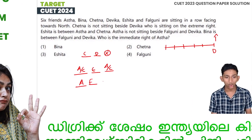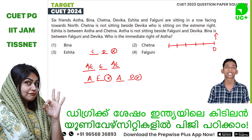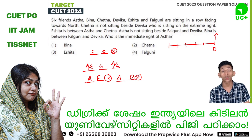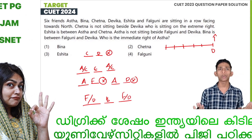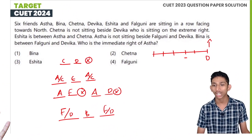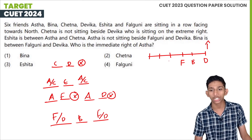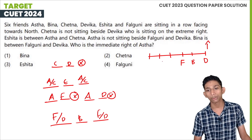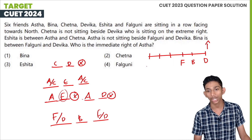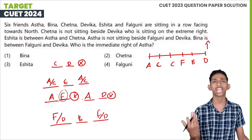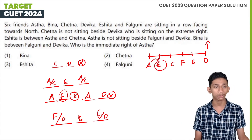Continuing the seating arrangement: Bina is between Falguni and Devika. Working through the constraints — Devika is on the extreme right, and using the given conditions — we determine the arrangement. The question asks who is the immediate right of Astha.